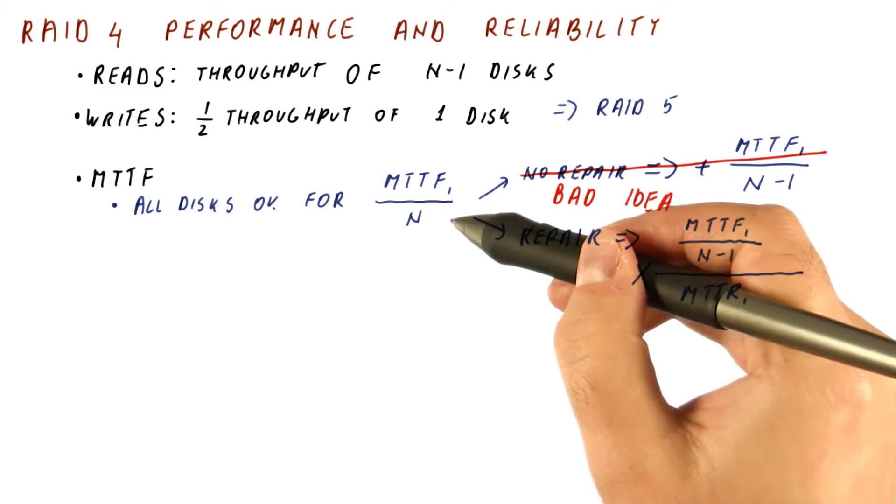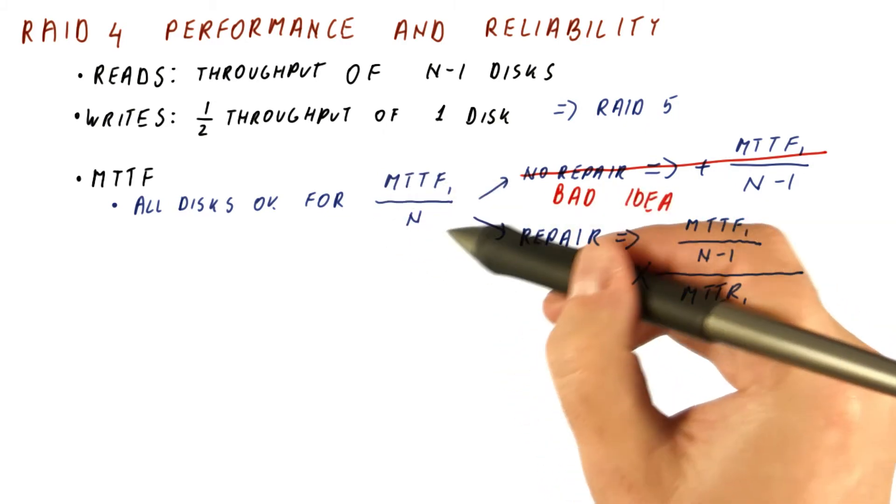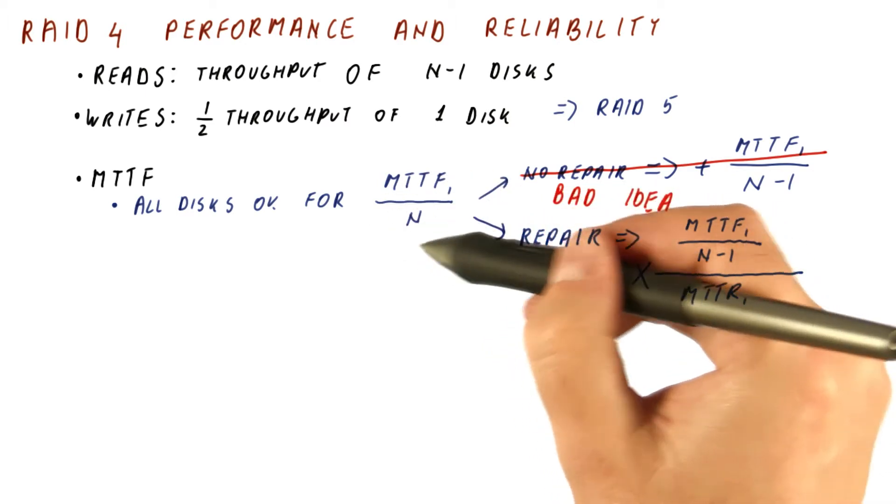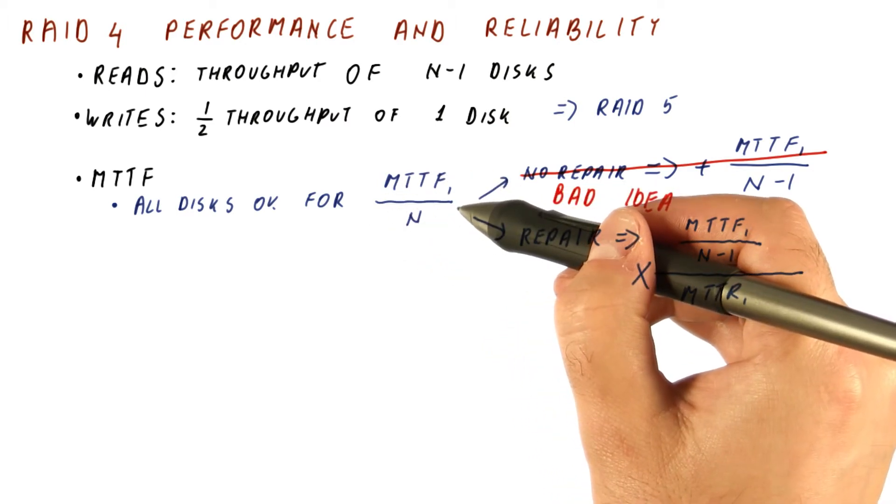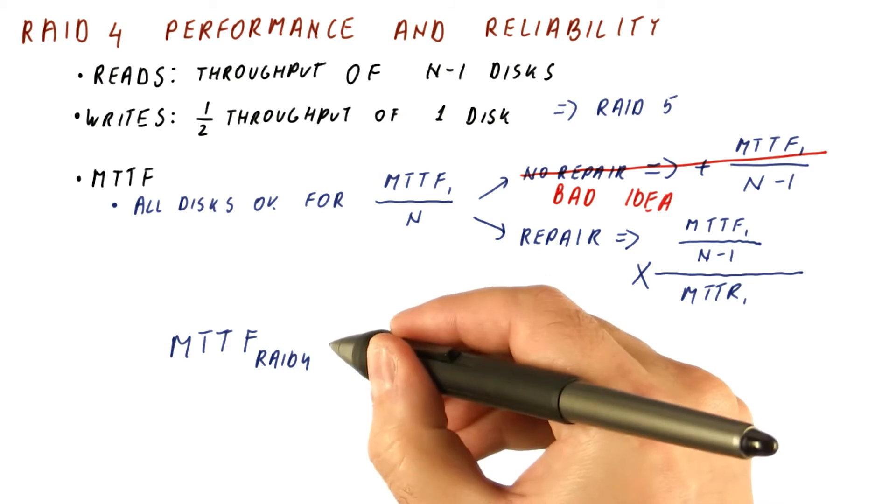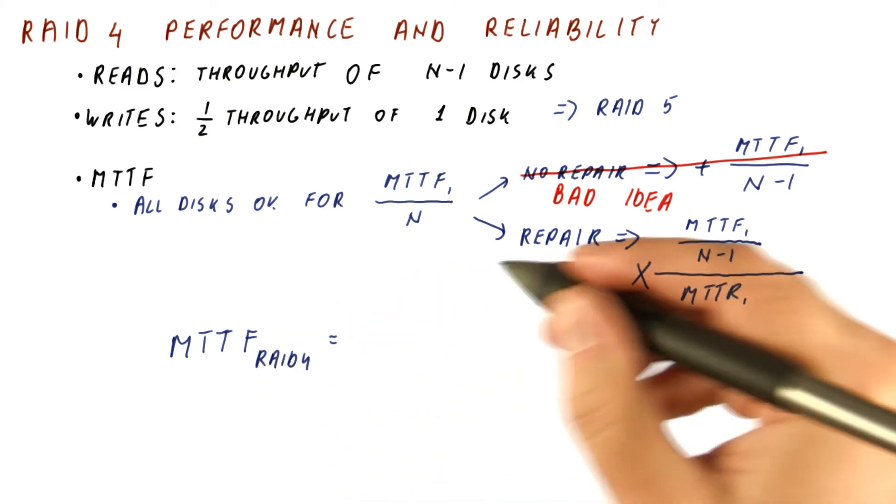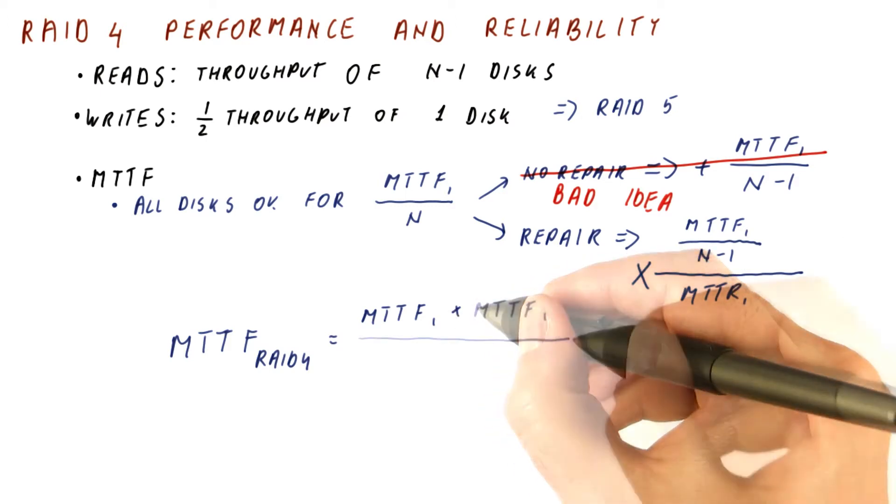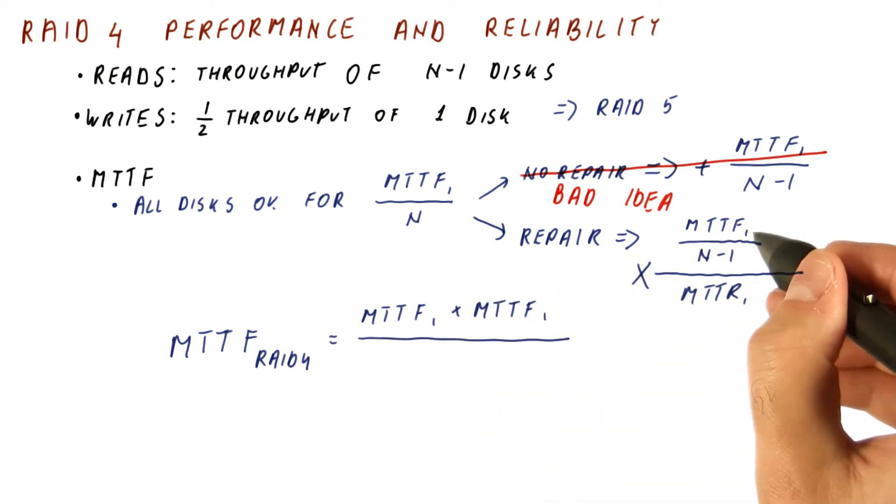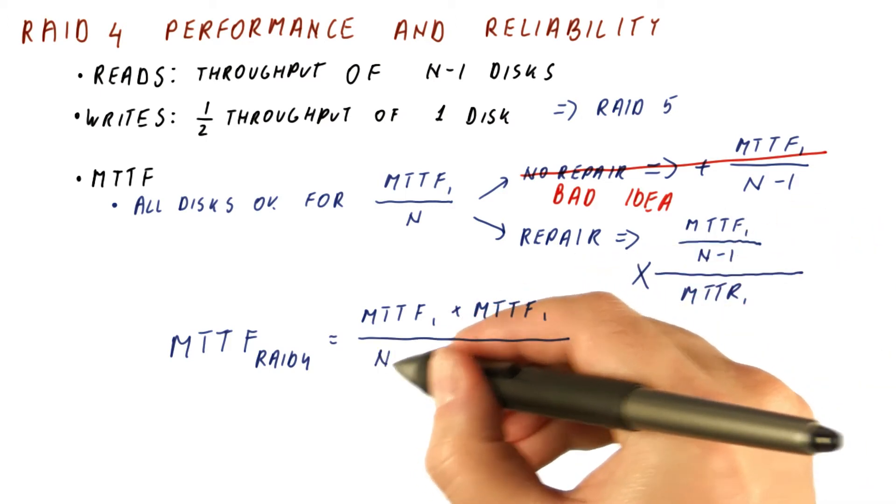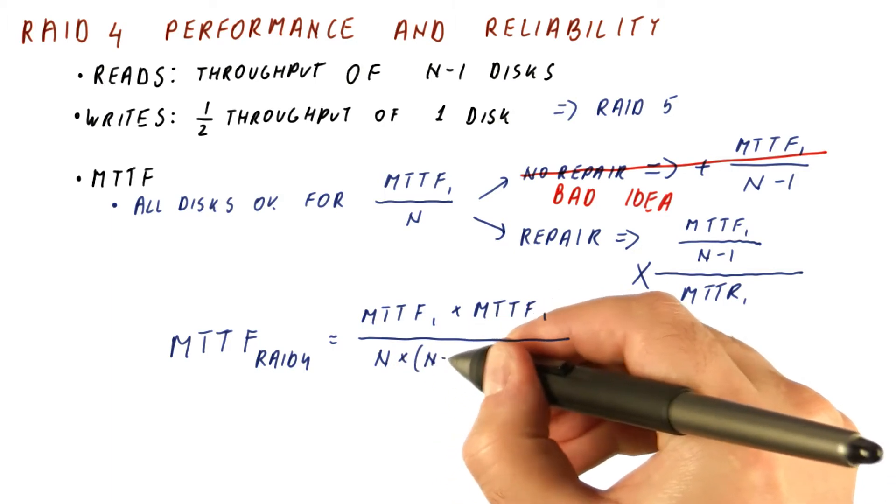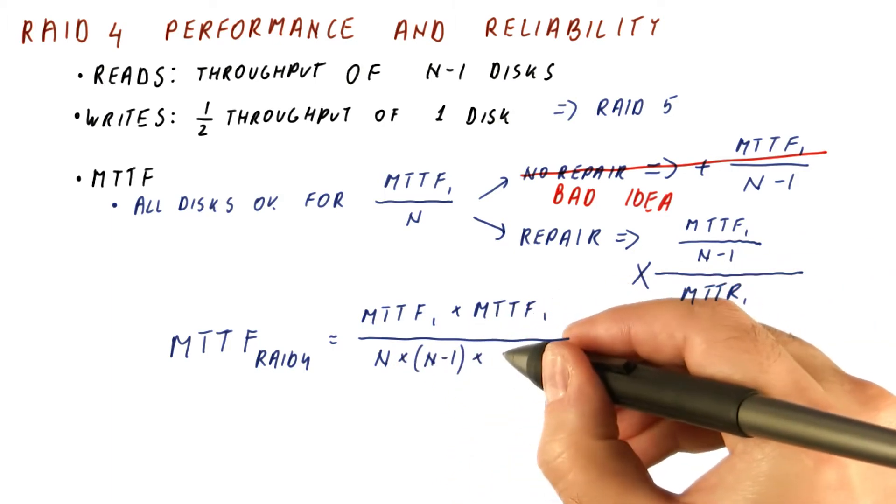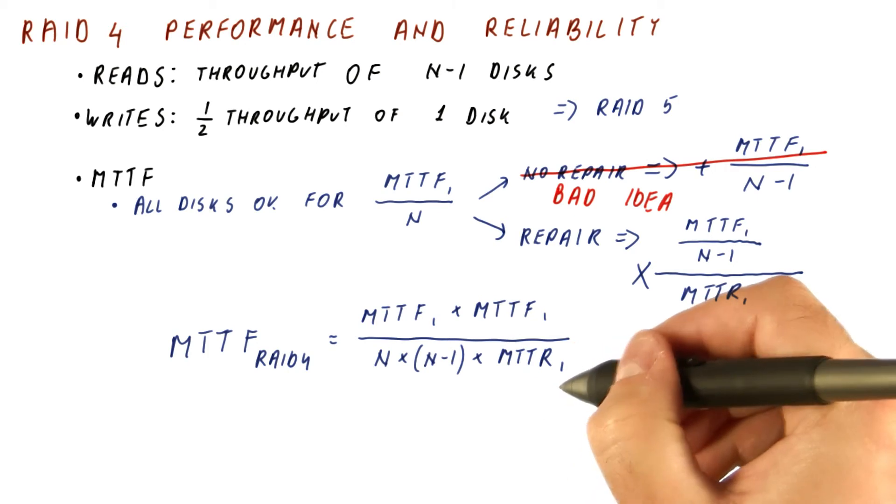So this is the factor with which we now multiply. This is for how long we get a RAID4 to work until we lose a disk. So overall, the MTTF of a RAID4 array is going to be the MTTF of one disk times the MTTF of one disk divided by n times n minus 1 times the MTTR for the disk.